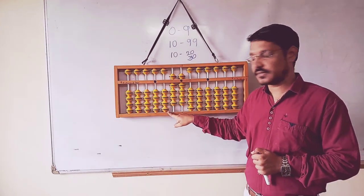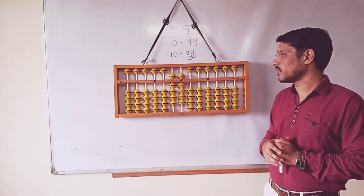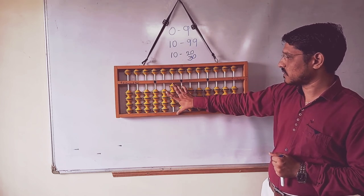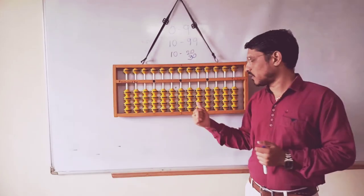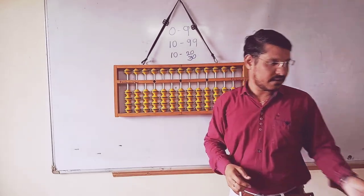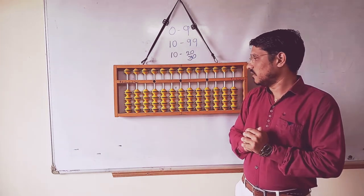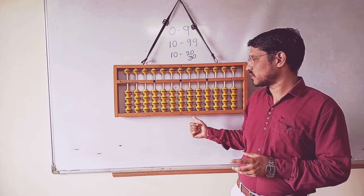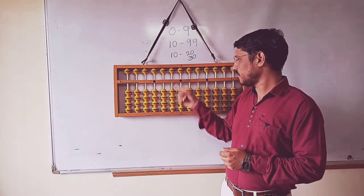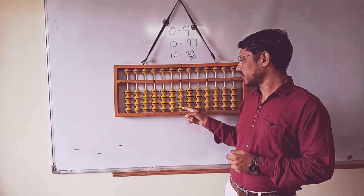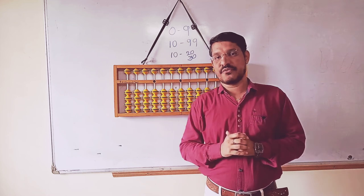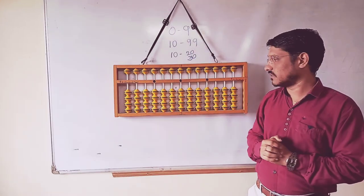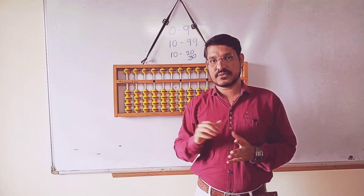So today I have discussed how to do 1 to 99. Tomorrow in my next class, I will take one more part, that is from the 3rd row, that will start from 100 to 999. One more trick I will tell you. Without the Abacus tools, we can calculate 1 to 99 without the tools. I will give you a small example. It is finger mathematics.